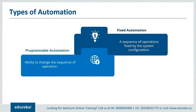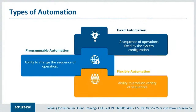Programmable automation can be used to change the sequence of any operation based on requirements specified by the user. It has made it to the front end of the user interface by providing various options to edit the sequence as per requirements. Flexible automation can inherit both fixed and programmable automation. It has the ability to produce a variety of sequences that are not limited to just one static type of automation.